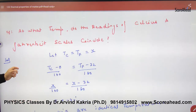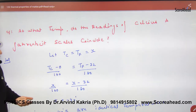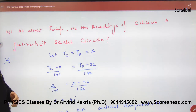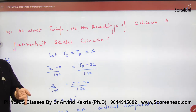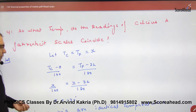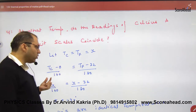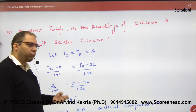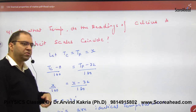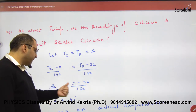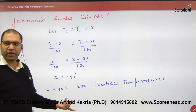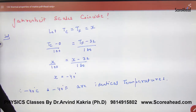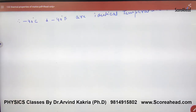At what temperature do the readings of Celsius and Fahrenheit scales coincide? Using the conversion formula, set both temperatures equal to x. Solving for x gives the value of minus 40°. So this is your thermometry chapter overview.